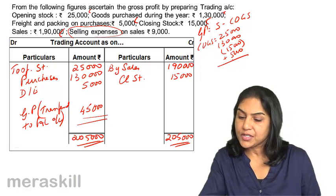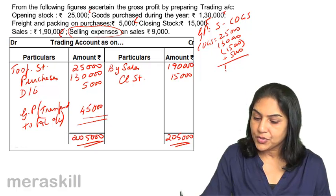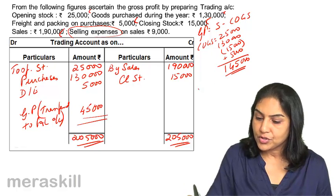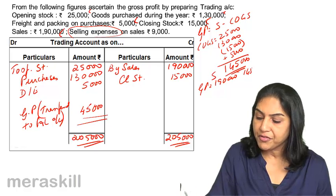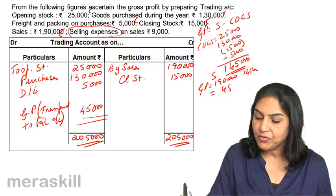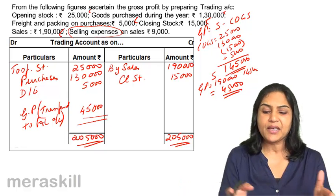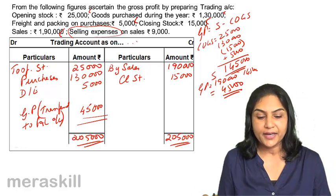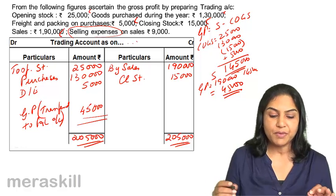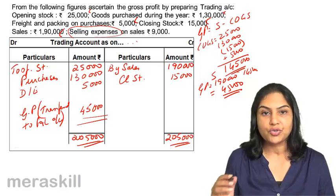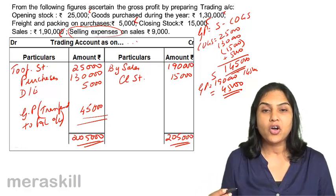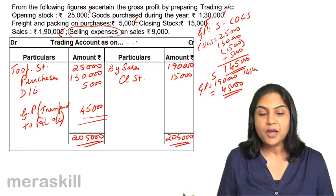This comes to 1,45,000 — that is the cost of goods sold. So gross profit equals 1,90,000 sales minus 1,45,000, equal to 45,000. The same result is reflected in the T-account format. This is how a trading account is prepared: opening stock plus purchases plus all direct expenses, less closing stock gives cost of goods sold; sales minus cost of goods sold gives gross profit or gross loss, which is taken to the profit and loss account.